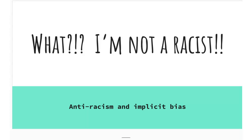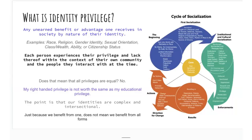Hello and welcome to the second part of chapter five. What we are going to be covering today is the idea of anti-racism and implicit bias. You've already completed some of the basic work in chapter five going over discrimination and prejudice and what these terms mean and where they came from. Now we're going to look a little deeper into prejudice and racism. We'll revisit the cycle of socialization and identity privilege — any unearned benefit or advantage we receive in society by nature of our identity — and we all looked at different ways in which we are privileged and other ways where we are not privileged or disadvantaged.